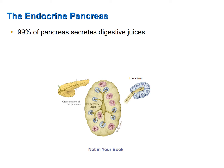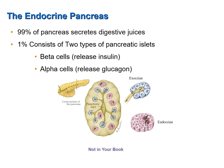The other 1% of the pancreas is composed of endocrine glands, specifically pancreatic islets, color coded in pink. Some of these cells are beta cells, which release insulin. Other cells of these islets are alpha cells, which release the hormone glucagon. We will now discuss further these two hormones, insulin and glucagon.